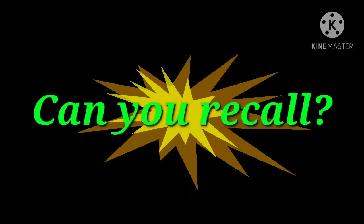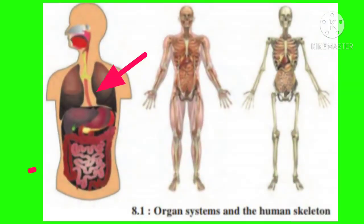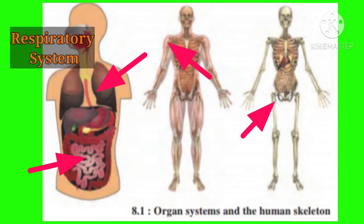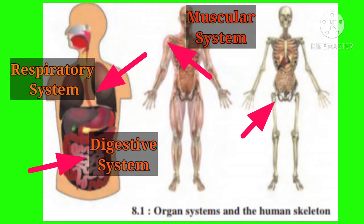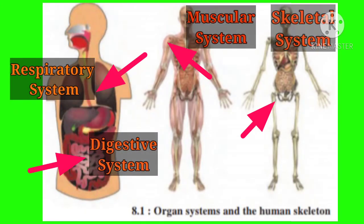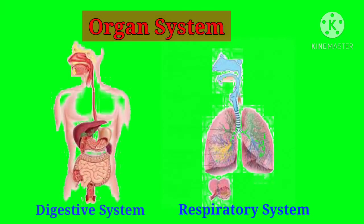Can you recall which organ systems do you see in the figure alongside? In this figure we can see the respiratory system, digestive system, muscular system, and skeletal system.